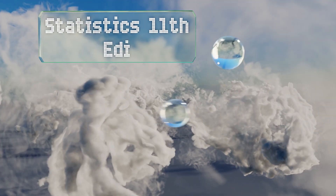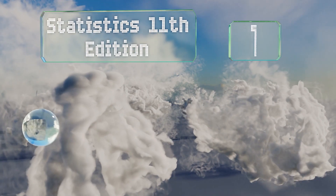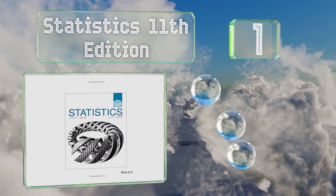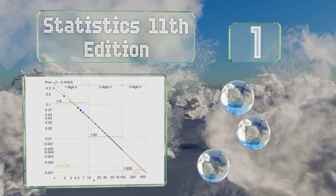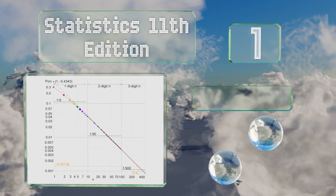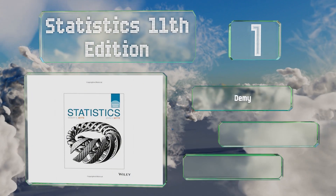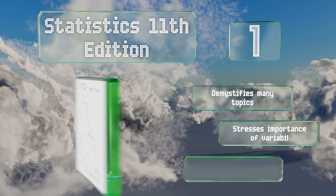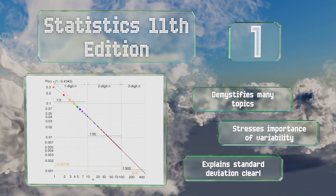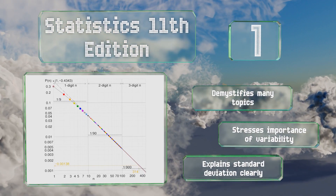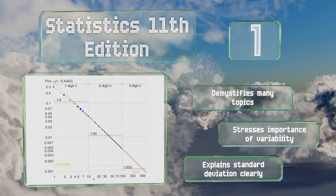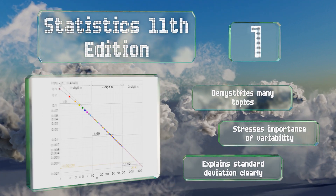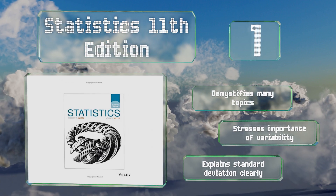And coming in at number 1 on our list, widely considered one of the best introductory texts around, Statistics 11th Edition by Robert and John Witt draws on 40 years of the author's experiences to offer students and professionals a concise and methodical approach to learning essential procedures. It demystifies many topics and stresses the importance of variability, and it explains standard deviation clearly.